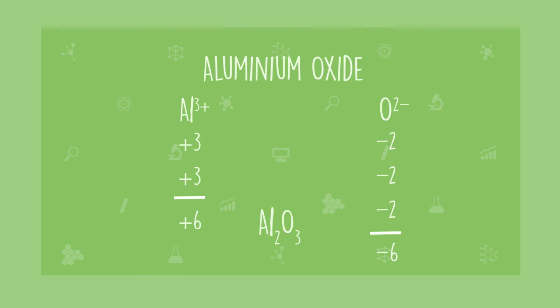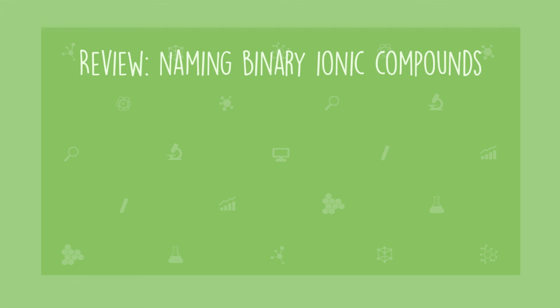So that's how we go about naming and writing chemical formulae for binary ionic compounds containing a metal and a nonmetal. Let's recap.